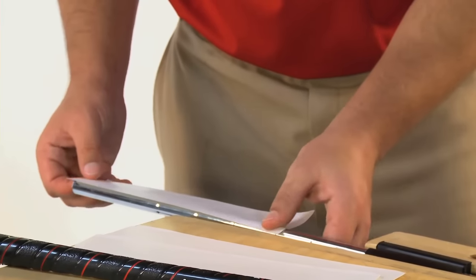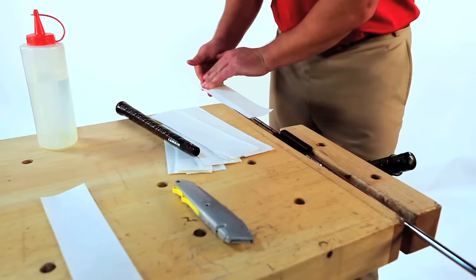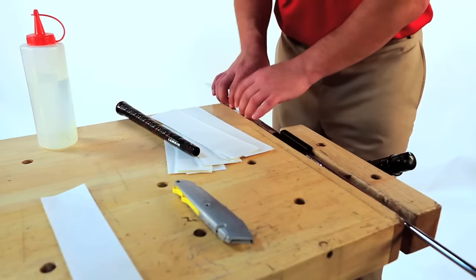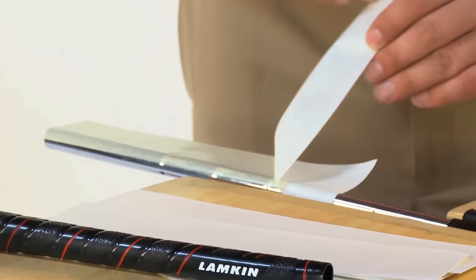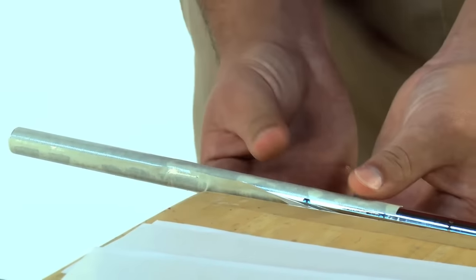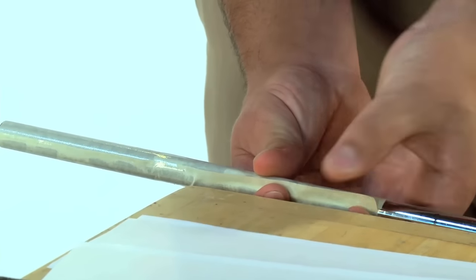Carefully place the sticky side of the tape strip on the golf shaft and partially wrap it around. Next, remove the backing from the top side of the tape strip and wrap it around the rest of the shaft, making sure it's secured firmly and evenly.